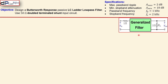The specifications are: maximum passband ripple must be 2 dB, denoted A_max; minimum stopband attenuation must be 10 dB, denoted A_min. The passband frequency fp is 1 kHz — at this frequency we must have the maximum passband ripple. The stopband frequency fs is 2 kHz — at this frequency we need the minimum stopband attenuation of 10 dB.